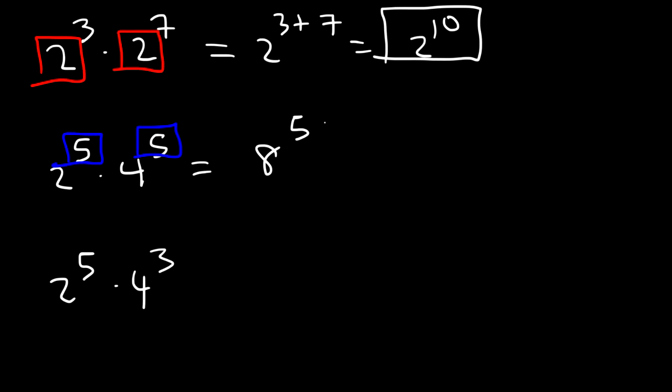In the last example, we don't have the same base or the same exponent. So we need to change it one way or the other. So what we could do is get the same base first. For example, 4 is equivalent to 2 squared. And when you raise one exponent to another, you need to multiply. 2 squared raised to the 3rd power is going to be 2 to the 6th. Because 2 times 3, if you multiply these two, it will give you 6. And then you can add 5 plus 6, which is 11. Now if you type that in your calculator, 2 to the 11th power is 2,048. So that's the final answer.